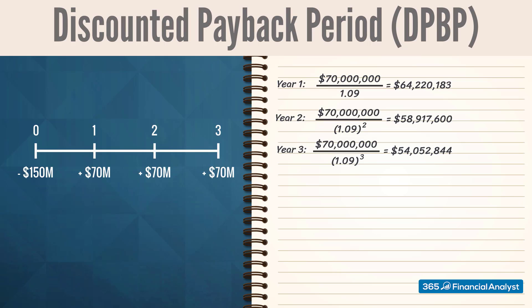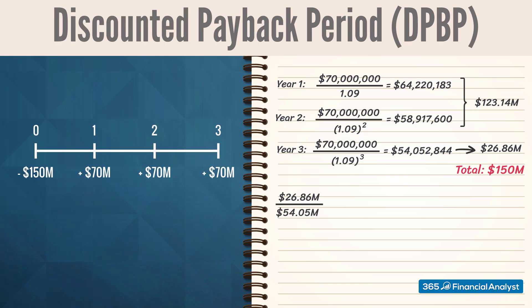The combined discounted cash flows for the first two years of the project equal $123.14 million. This means that we need $26.86 million of the cash flow in year 3 to break even. Notably, $26.86 million divided by $54.5 million is equal to approximately one-half of the third year's cash flow. Assuming that the cash flow is paid uniformly throughout the year, the discounted payback period would be two and a half years.